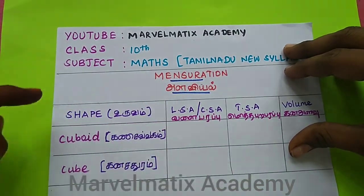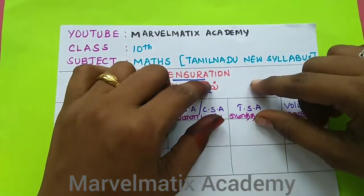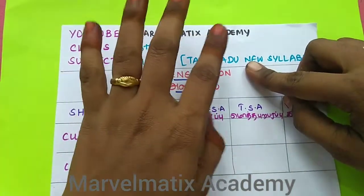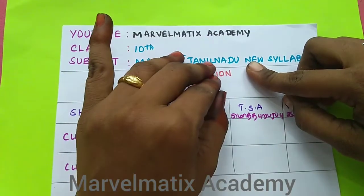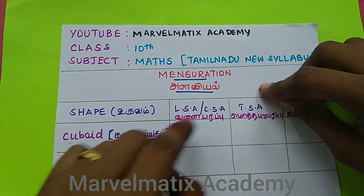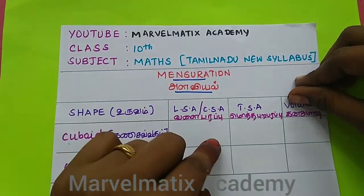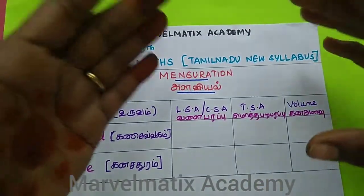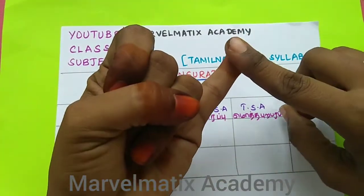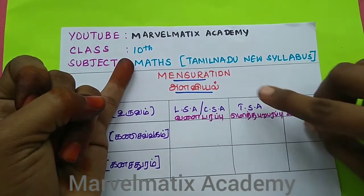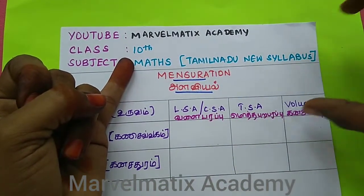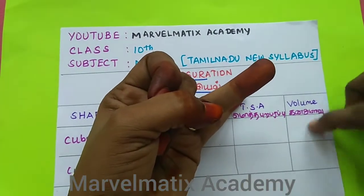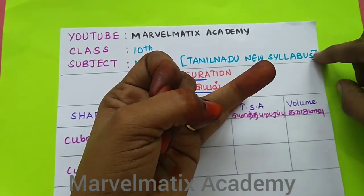We will look at 4 to 5 videos to see how to find the formulas. The first formula is how to use this formula. The first exercise is LSA, CSA, TSA — these are for different shapes. That is the first exercise. The second exercise is Volume.